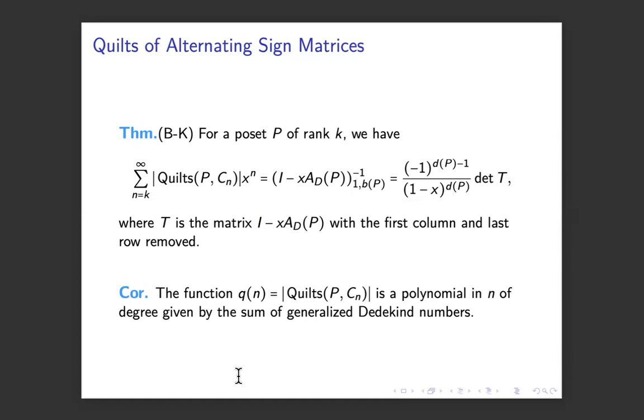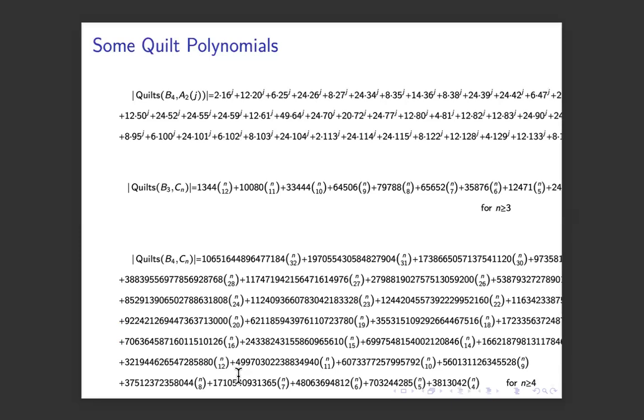Another nice example is in the case where you take any poset crossed with cn, which is the case for the medium roast order. And then we do get nice enumerative properties. We can prove that counting those kind of quilts is always going to be a polynomial function of n. And we can say what the degree is of these polynomials, but they grow fast. Here's some examples of those polynomials that we're talking about. So the coefficients get pretty out of hand pretty fast, but one can write them down. And you write them down in terms of an analog of standard Young Tableau. And we think that those are also worth looking at.